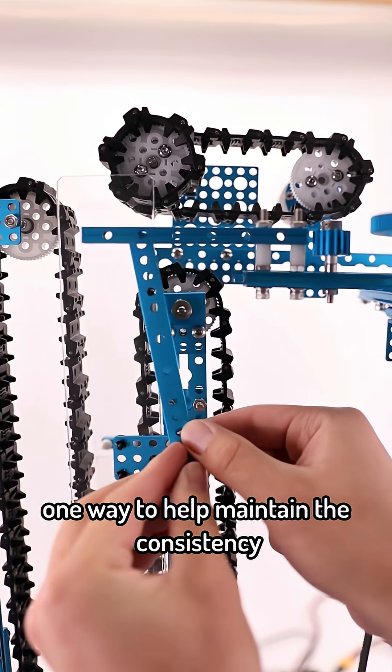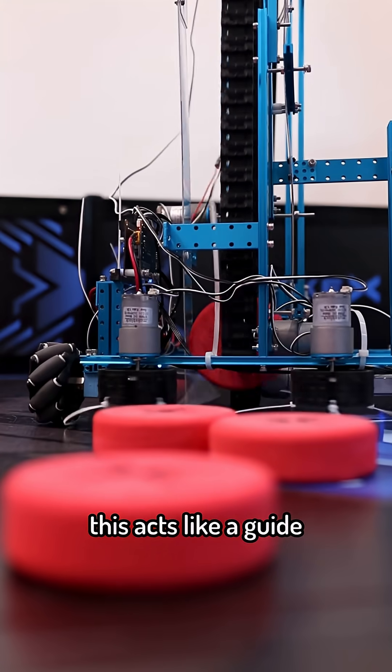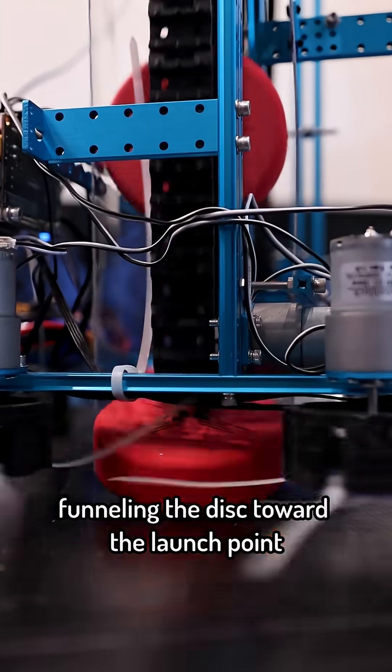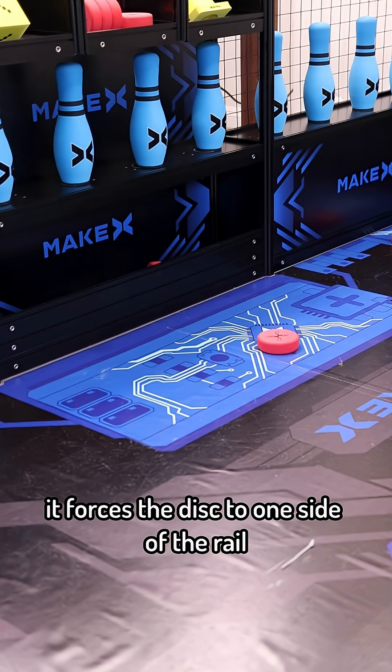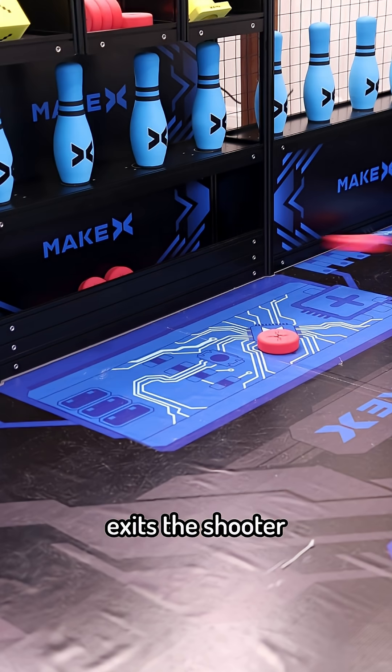One way to help maintain the consistency is by adding a secondary free spinning wheel. This acts like a guide, funneling the disc toward the launch point. It forces the disc to one side of the rail, reducing the gaps and improving the accuracy before the disc exits the shooter.